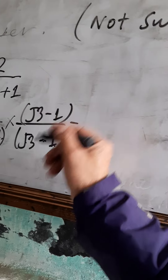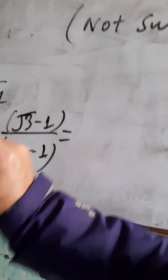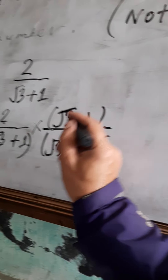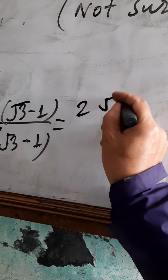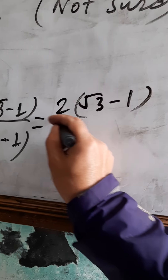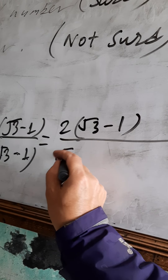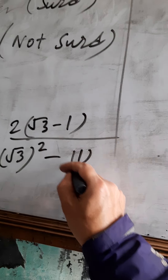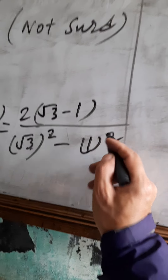We write root 4. This is A square minus B square. What do you write for root 3 minus 1? 2 into root 3 minus 1. This is root 3, this is A square minus 1. This is A plus B into A minus B, then A square minus B square.